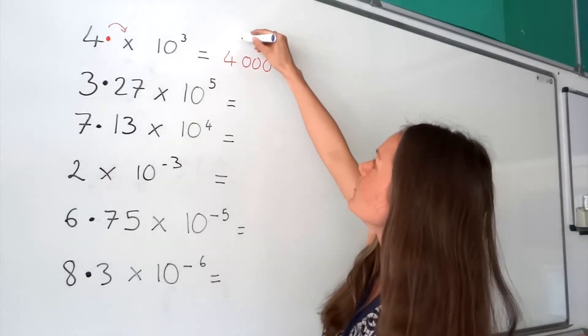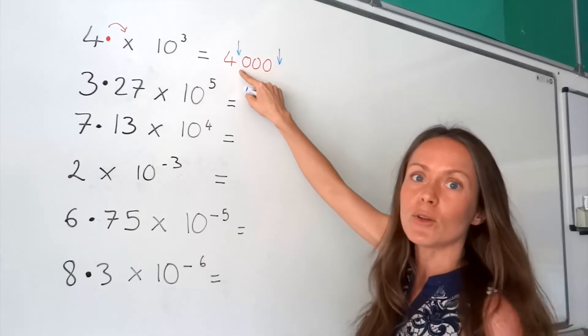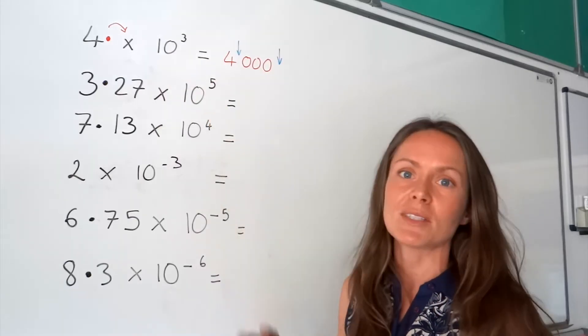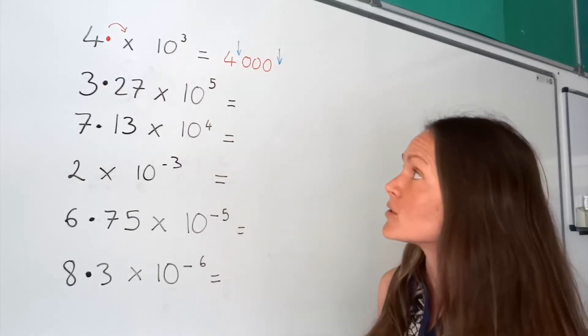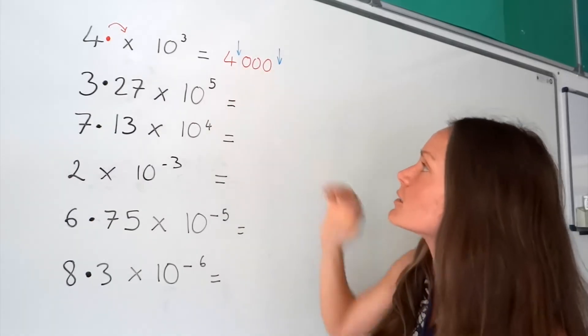Now you should be able to see that the decimal used to be there, now it's there, so it's moved three places. This makes sense because 10 cubed is 10 times 10 times 10, which is 1,000, and 4 times 1,000 is 4,000. So that's the first one done.